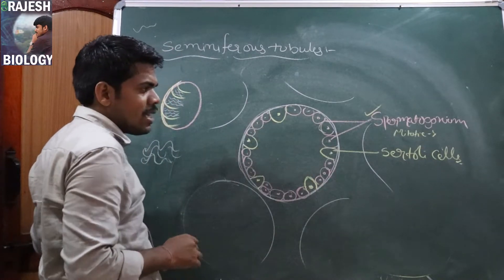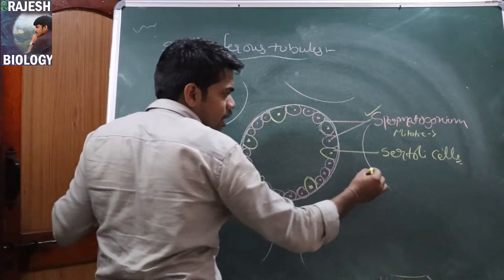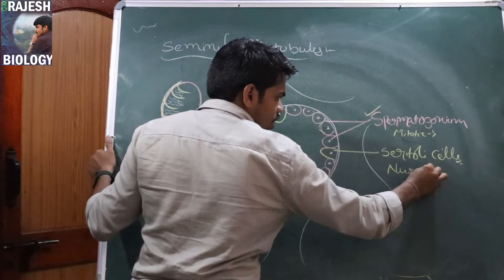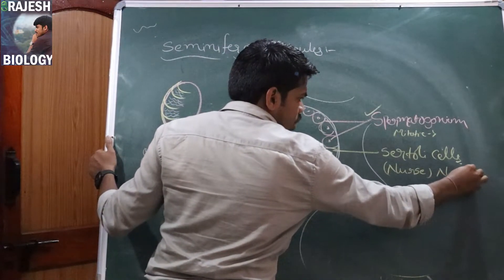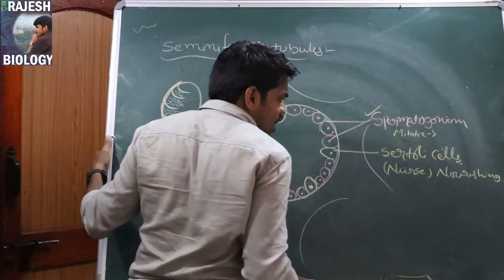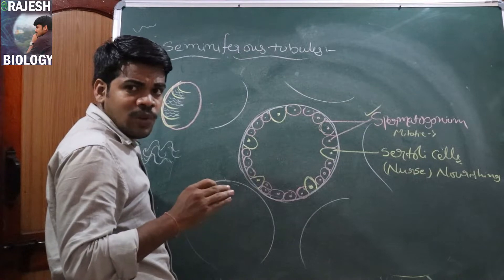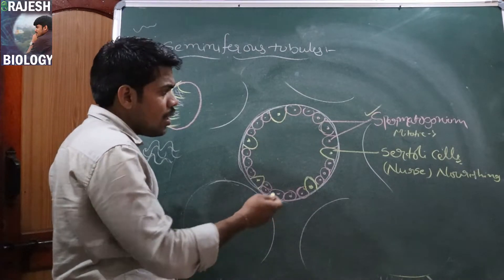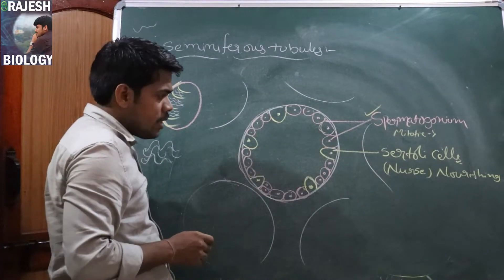Now, what is the function of Sertoli cells? Sertoli cells are also called nurse cells or nourishing cells. They nourish the sperm cells and the mother cells as well — giving nutrition to the spermatogonial cells and newly formed sperm cells.